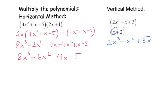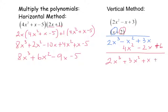Then I'm going to choose my 2 and multiply everything by the 2, making sure I'm lining up my like terms. So 2 times 2x squared is 4x squared, 2 times negative x is negative 2x, and 2 times 3 is 6. So all I have to do now is add up the like terms. My answer is 2x to the 3rd plus 3x squared plus x plus 6.